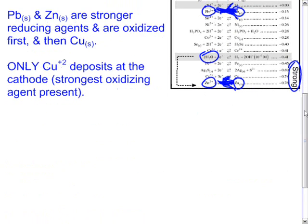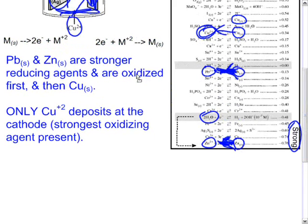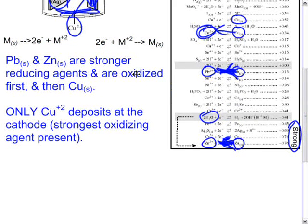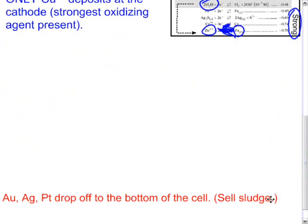So lead and zinc are stronger reducing agents and are oxidized first, and then the copper solid. Only copper plus 2 deposits at the cathode. It is the strongest oxidizing agent present.